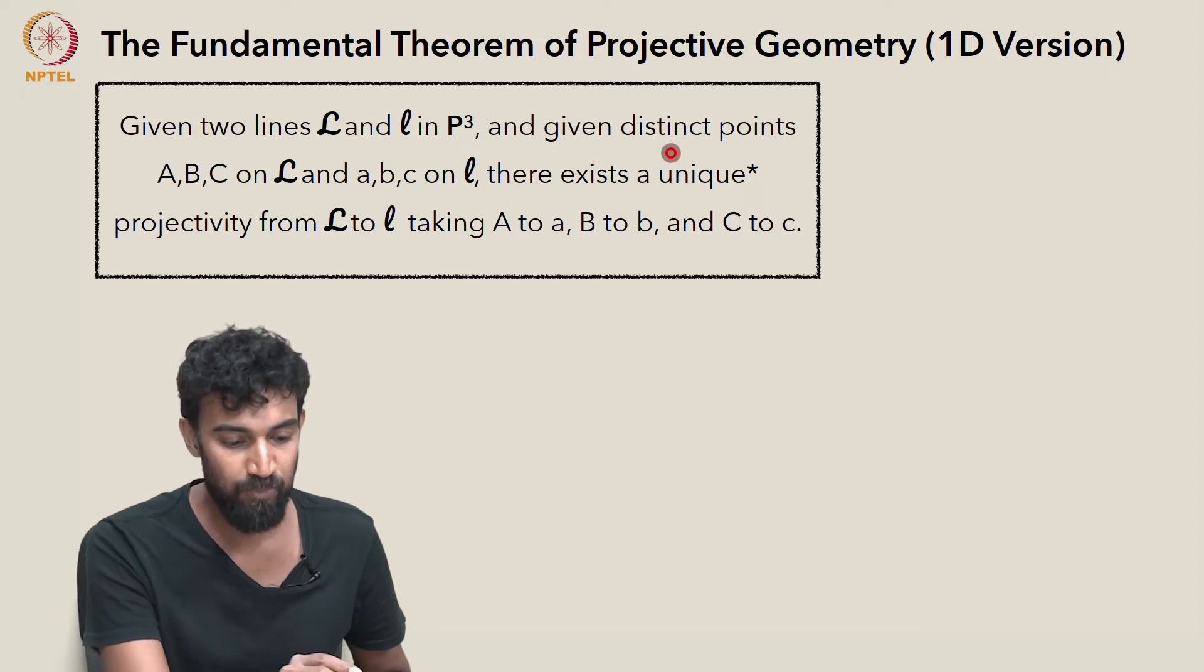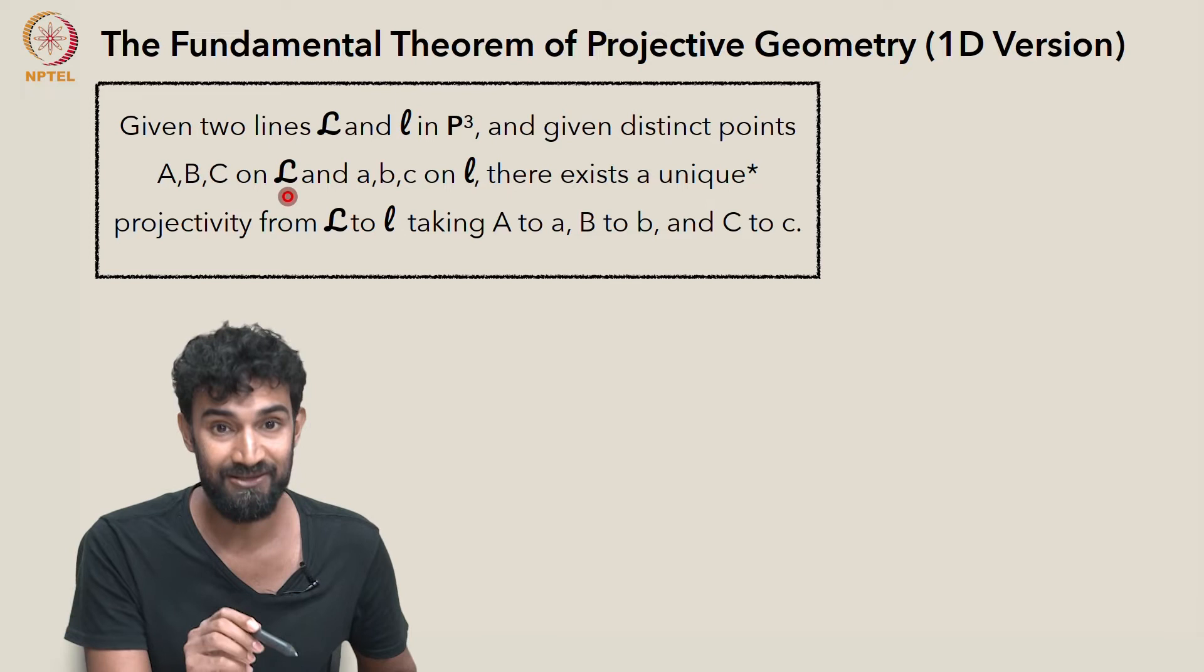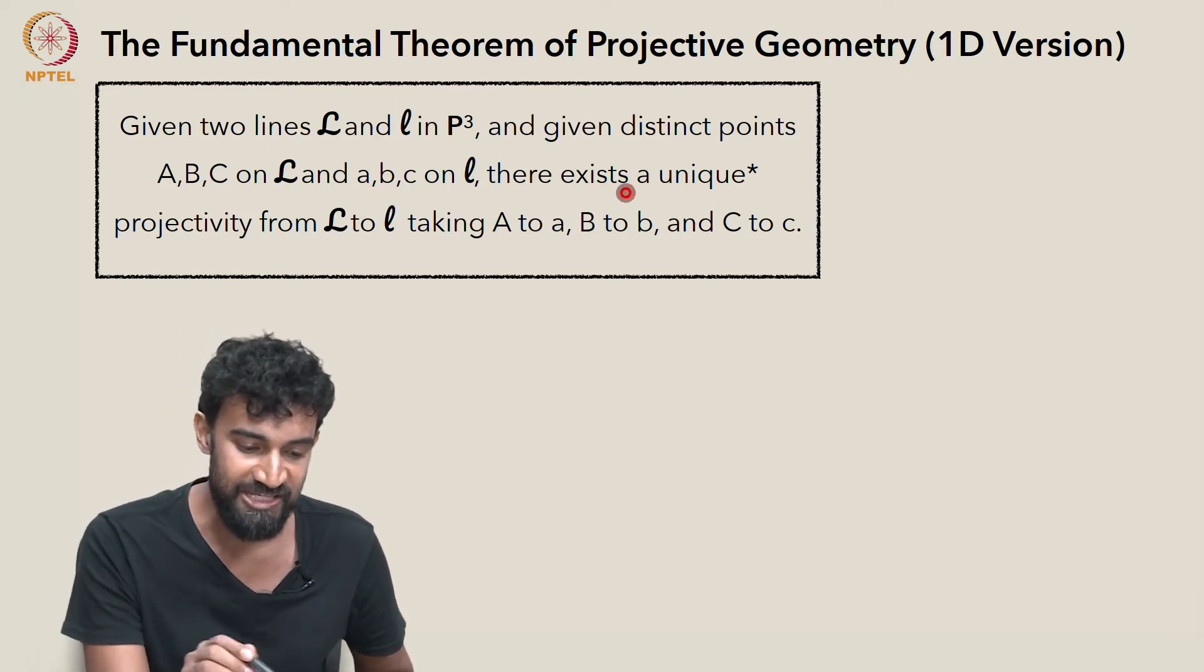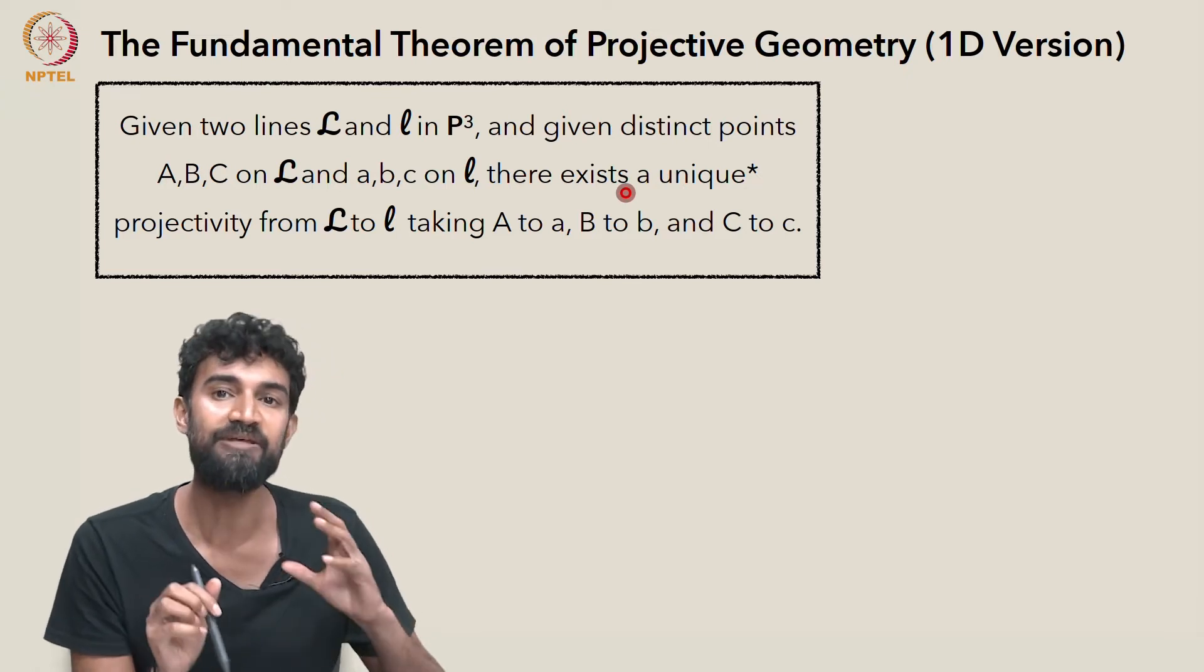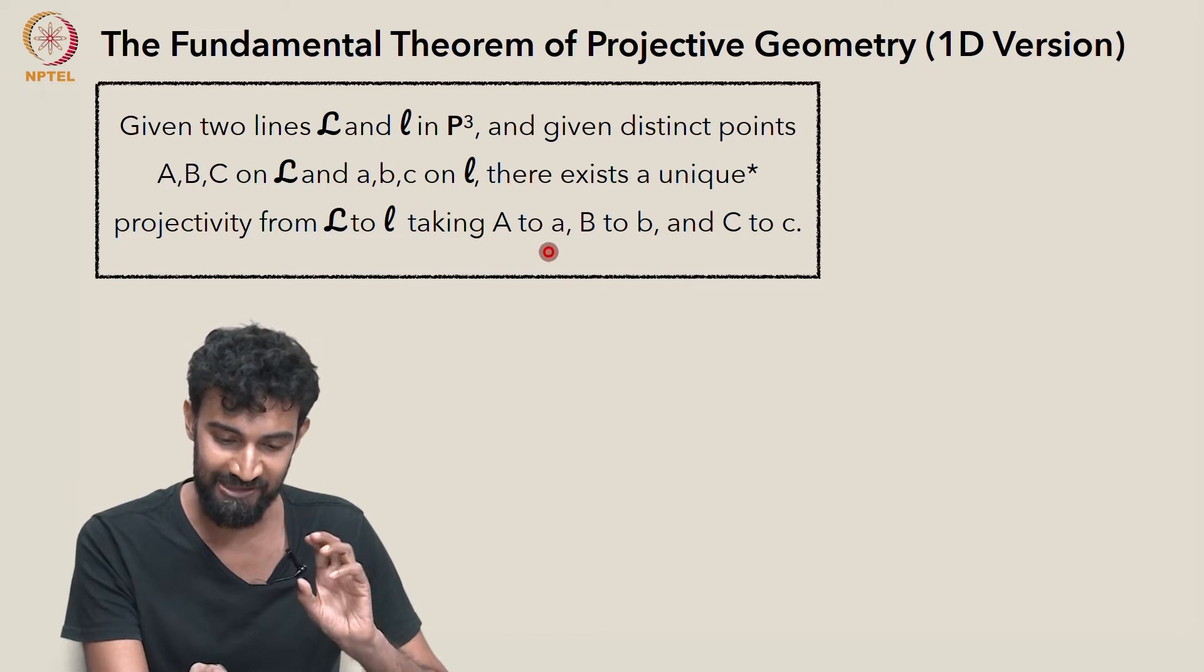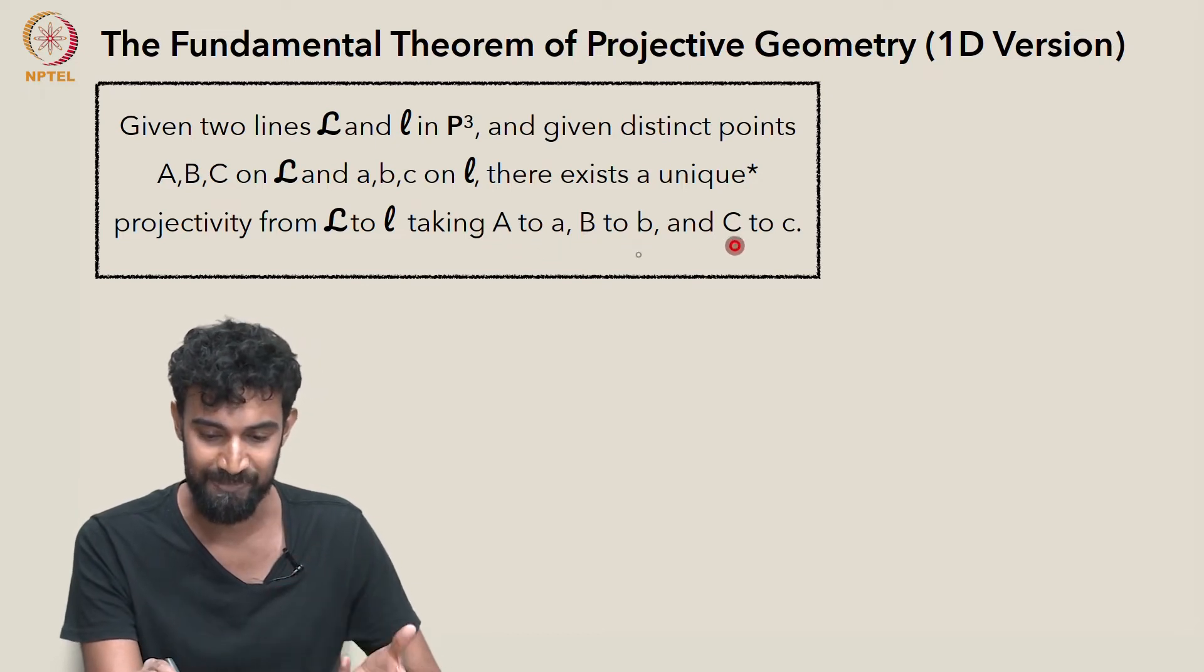and given distinct points A, B, and C on capital L, and little a, little b, little c on little l, there exists a unique projectivity from capital L to little l, which takes capital A to little a, capital B to little b, and capital C to little c.